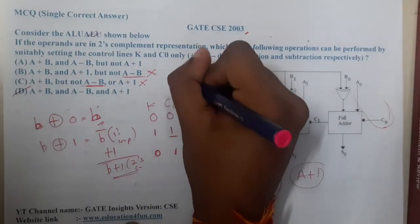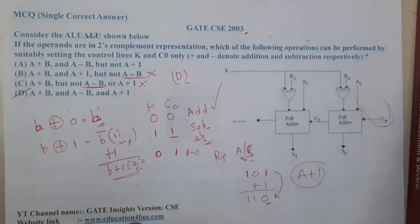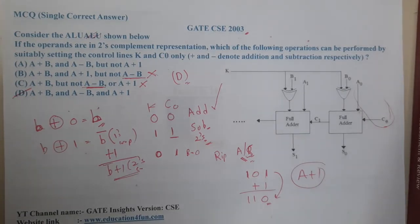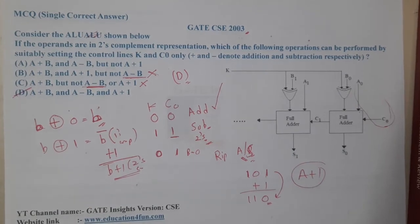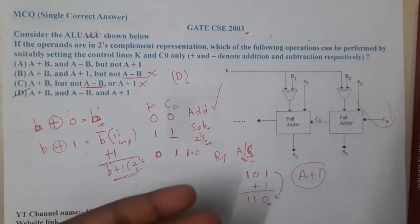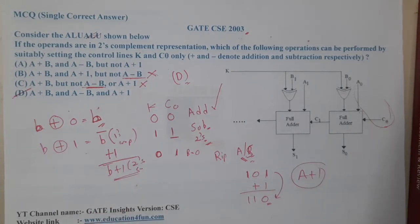With that understanding, you can say D is the correct answer. It's a quite interesting question. Now I hope everyone got a clear idea with respect to this question. It can perform three operations: addition, subtraction, and increment.